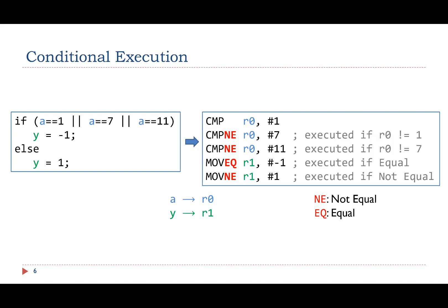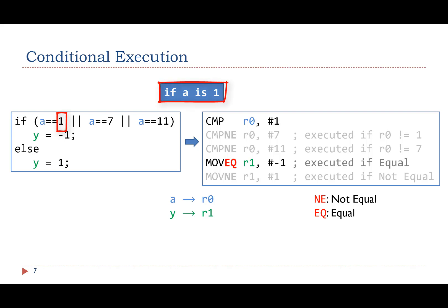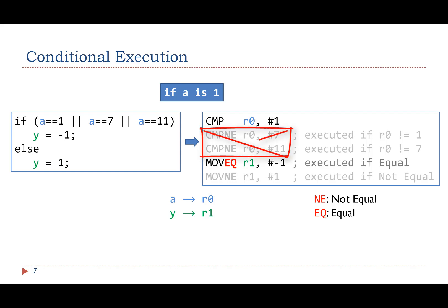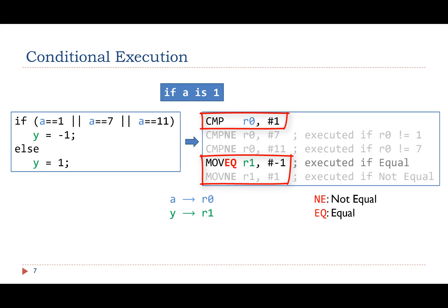They are executed only if the not-equal condition is satisfied. Pay attention: the second CMP will change the NGCV flags if it is executed. If A is 1, those three instructions won't be executed. Since the second and third CMP instructions are not executed, the NGCV flags remain unchanged after the first instruction. Therefore, the MOV instructions use the comparison results of the first CMP to test whether they should be executed — specifically, based on the NGCV flags modified by the first CMP.